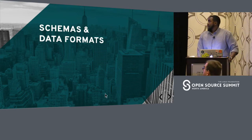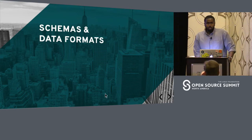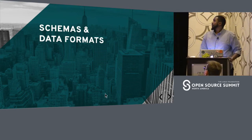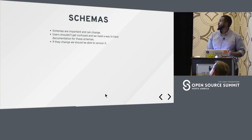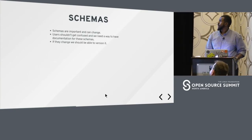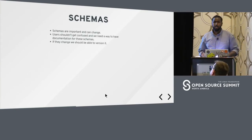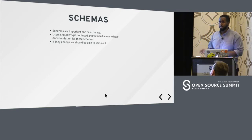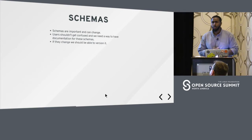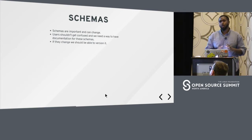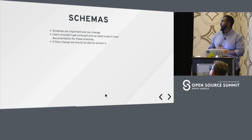Let's talk about data formats. You have schemas, and everything has a schema — either schema on write or schema on read. The important thing is when you have schemas, you want to have them versioned and documented, because what often happens is an engineer creates the schema and then they're gone, and there's no documentation for what each field means. It takes a long time to track down what these fields actually mean.